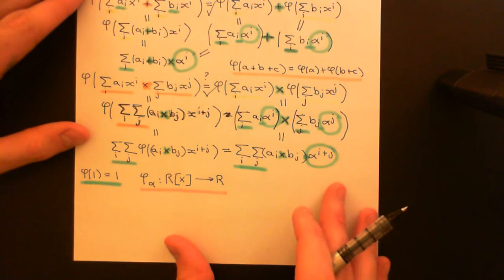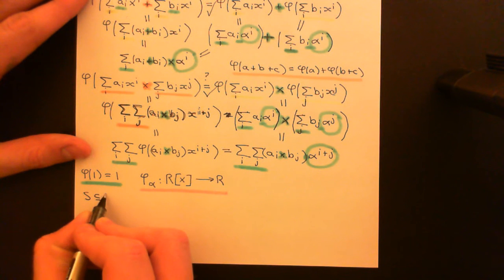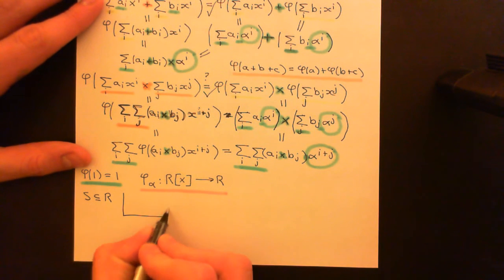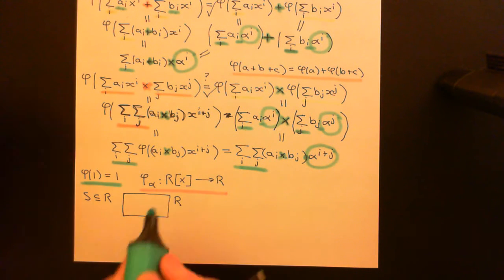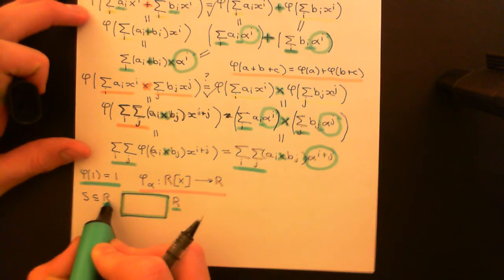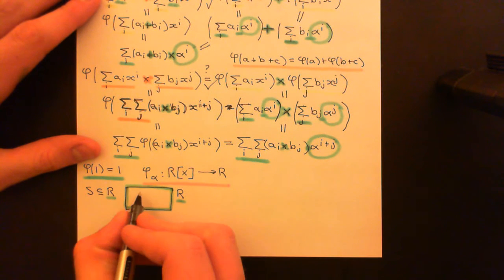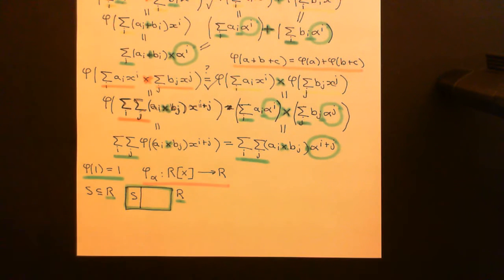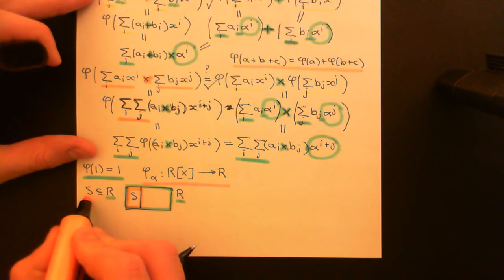So what I now want you to consider is: let's say S is a sub-ring of my ring capital R, so it's a sub-ring of my coefficient ring. Drawing a basic picture then, here is my entire ring capital R shown in green — this box represents all of the elements in my coefficient ring capital R. And now we're looking at a subset of this, which I'll call capital S, which is a sub-ring of the ring capital R, and I'll show this in orange.